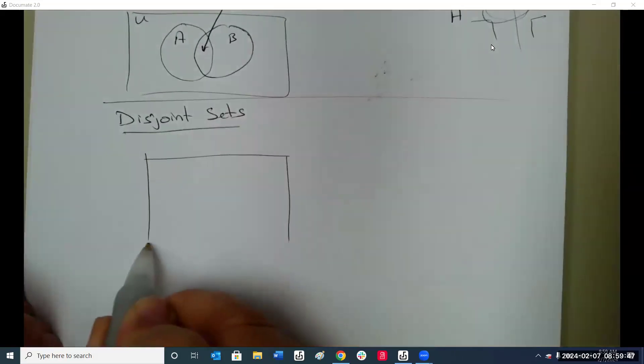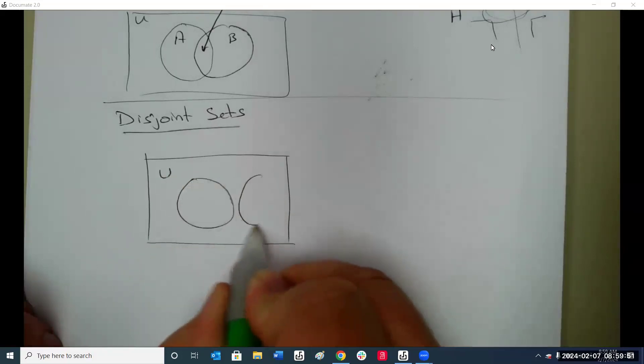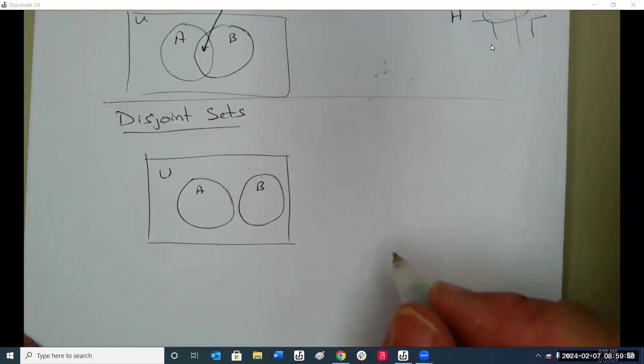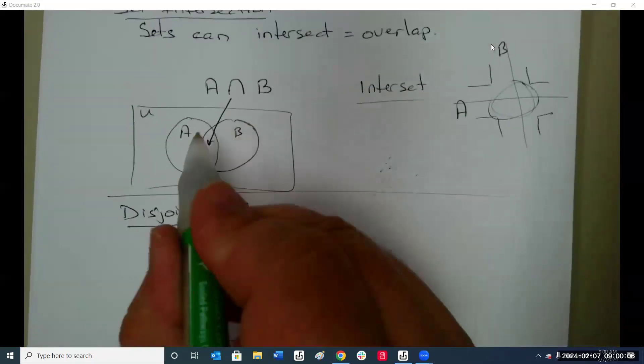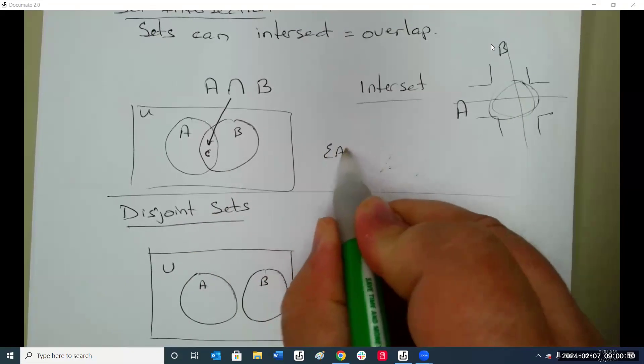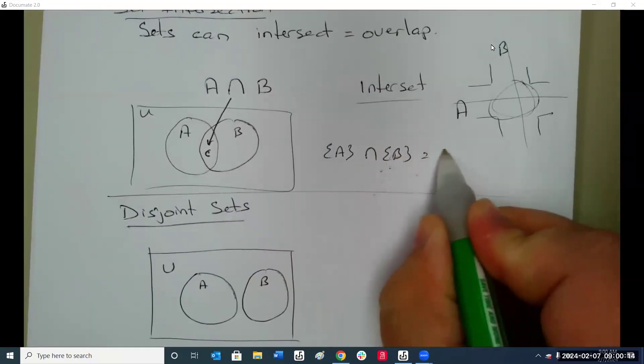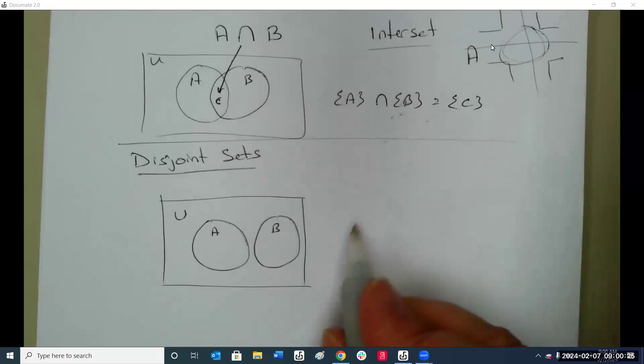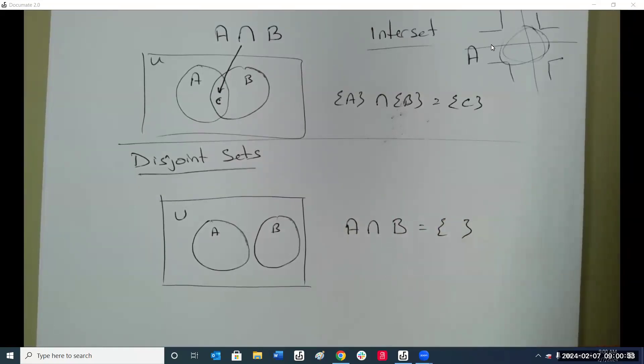Disjoint sets are where they have nothing in common. Let's call this one C where they overlap, so set A intersects set B equals the elements of set C. A intersect B equals an empty set. In other words, northbound road, southbound road, do they overlap? No.